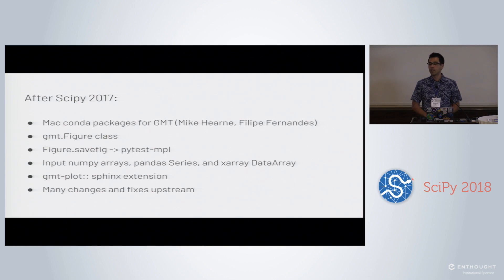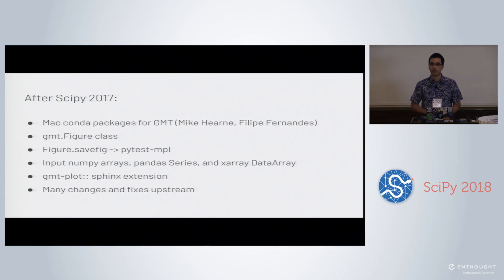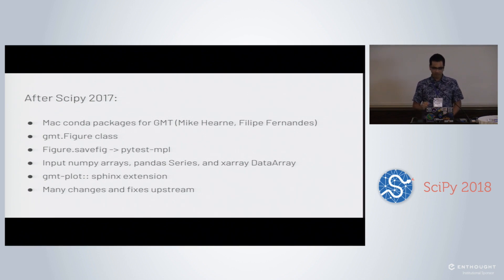All these changes happened after SciPy last year, where I gave a talk with the initial prototype. We got a lot of great feedback — for example, the figure class was suggested to us: don't use functions, instead have a figure object. That was very good because it allowed us to use PyTest MPL for testing without any modifications — we just give it our figure and it knows to call the savefig method. We also want to thank Mike Herney and Philippe Fernandes for helping make Mac builds of GMT on Conda Forge.